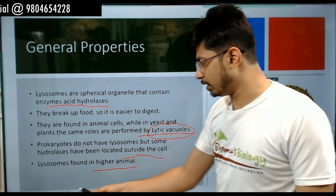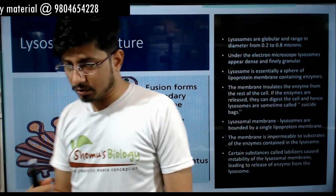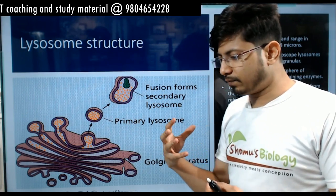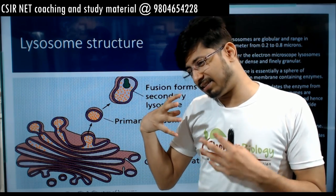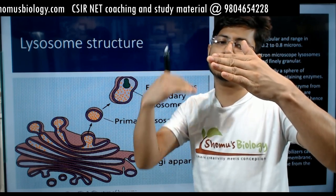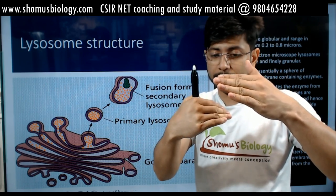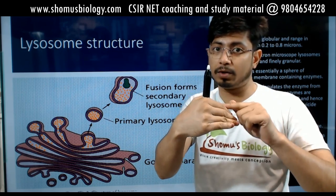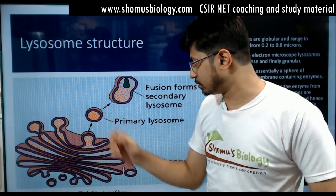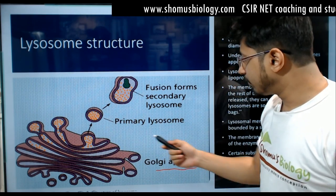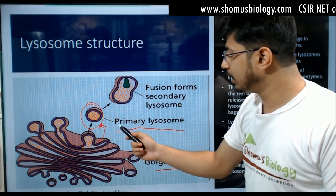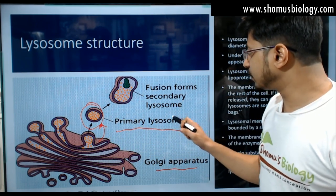Now let's move to the structure of lysosome. Lysosomes cannot be thought of outside the endomembrane system. The endomembrane system includes the endoplasmic reticulum, Golgi complex — cis Golgi network, medial Golgi network, and trans Golgi network. From the trans Golgi network, the primary lysosome forms and buds out as a vesicle from the Golgi apparatus.